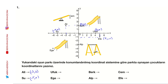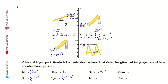Noktaları tek tek aşağıya yazalım: Ufuk (4,0), Ege (-6,-4), Berk (0,2), Alp (0,3), Cem (-2,4), Efe (5,-1).